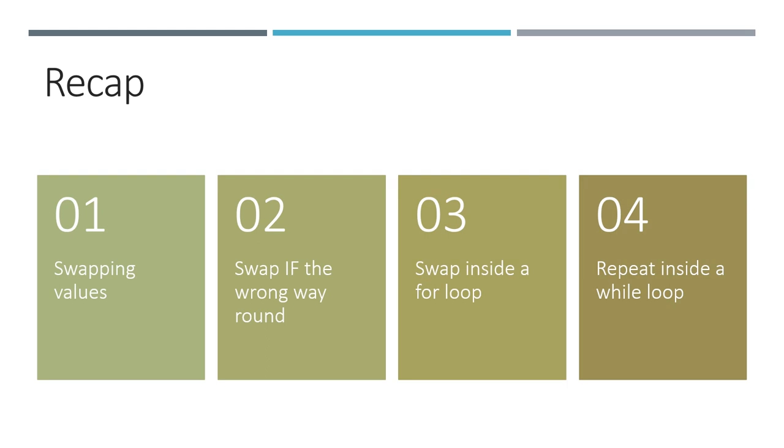We put that inside a for loop that traverses the entire list and then we repeat that over and over again inside a while loop. And if you've done all of those stages, you've written the bubble sort.